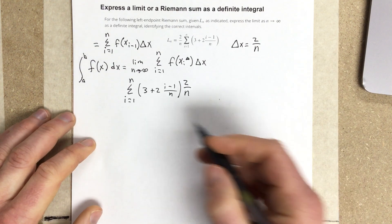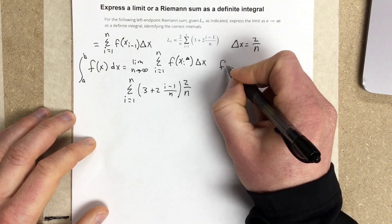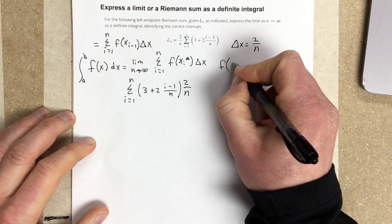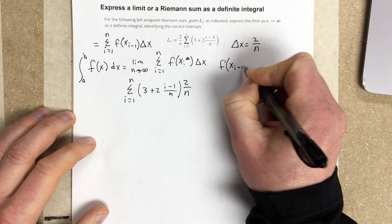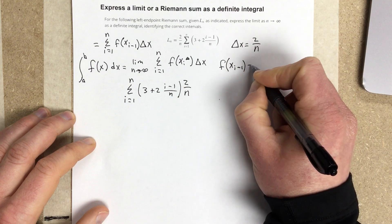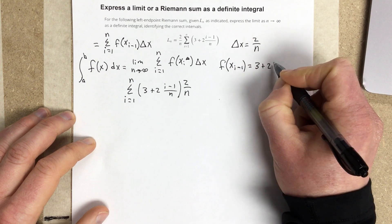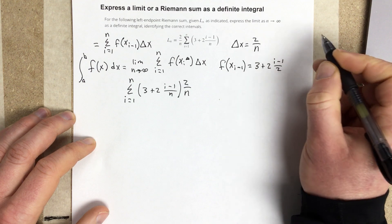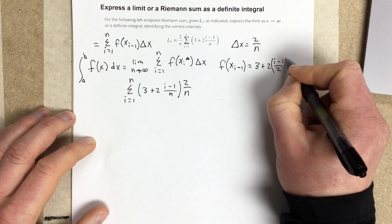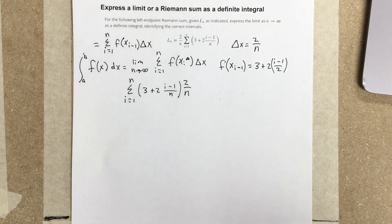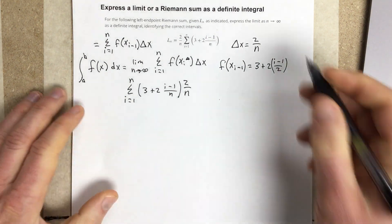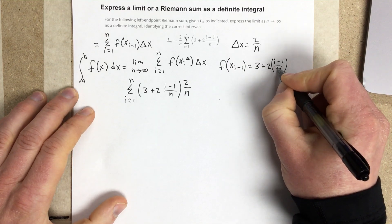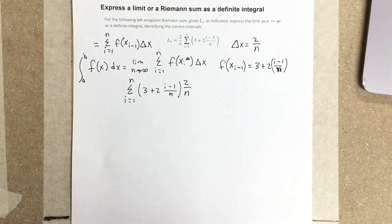And f(x_{i-1}) is equal to this 3 plus 2(i-1) over n piece. Got a little too happy there with the notation.